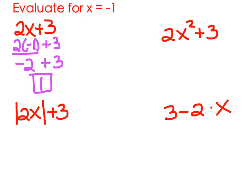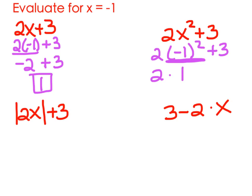The next one is 2x squared plus 3. So we've got 2 and then in place of x, negative 1 squared plus 3. PEMDAS says we do parentheses first, then the exponent. Negative 1 to the second power: negative 1 times negative 1 gives positive 1. So 2 times 1 plus 3 - multiply first, 2 times 1 is 2 - and 2 plus 3 equals 5.